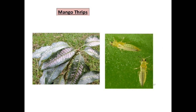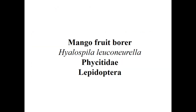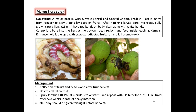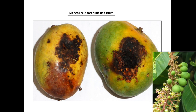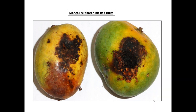Coming to mango fruit borer — Deanolis sublimbalis, family Pyralidae, order Lepidoptera. It is a major pest in Odisha and West Bengal; active from May onwards. Female lays eggs on the fruit; after hatching, larvae bore into the fruit. Fully grown caterpillars have red bands alternating with white bands on the body. Affected fruits rot and fall prematurely. Use fenthion spray at marble stage to control the pest and repeat with deltamethrin.